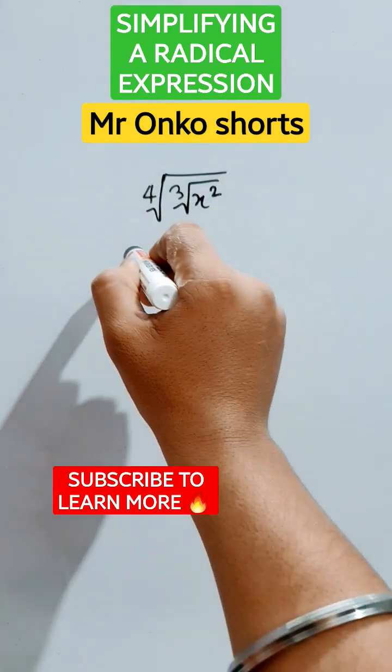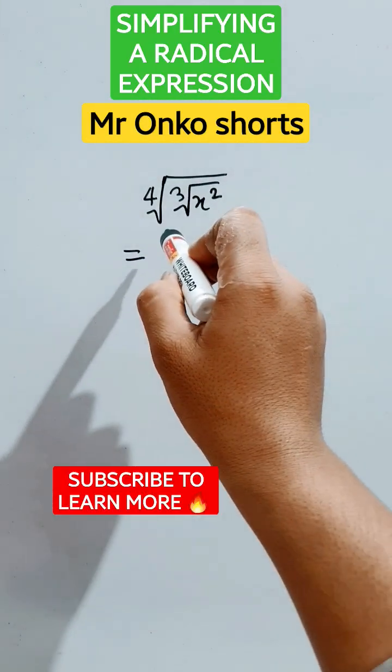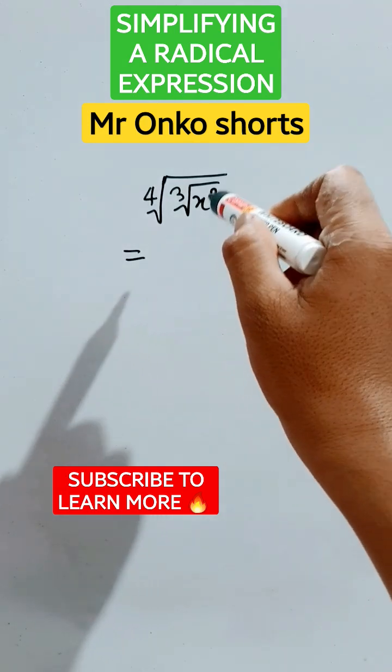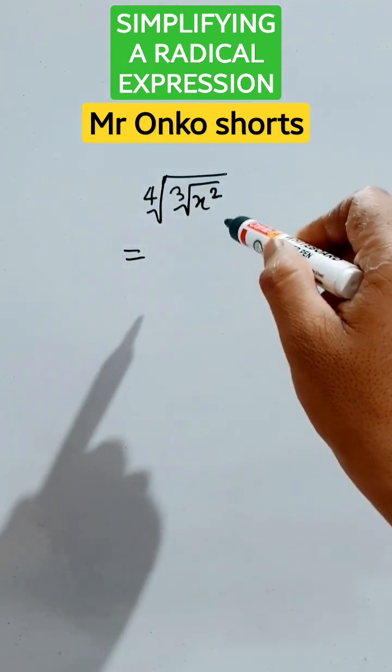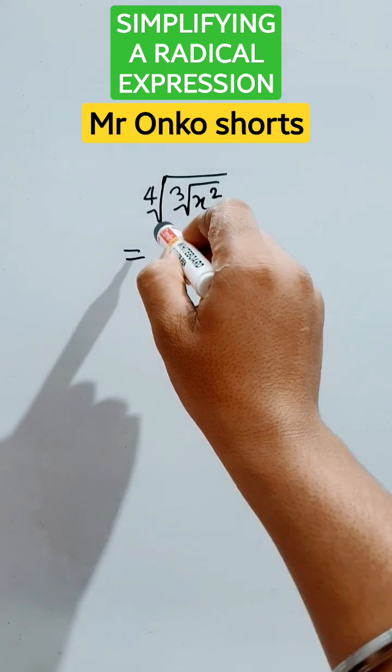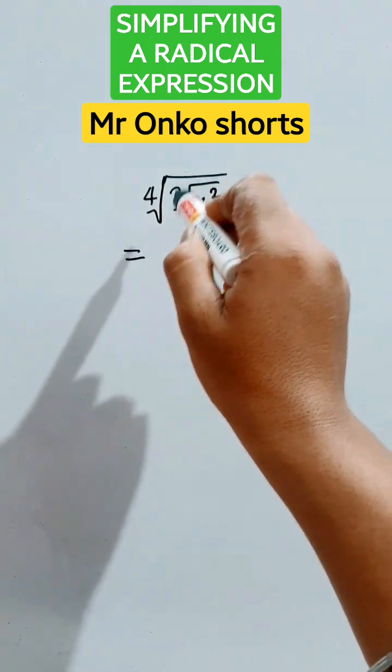Hello guys, welcome to Mr. Onko Shorts. Today we have a given radical question here we have to solve and find the simplified version of this question. So first of all, this is fourth root of this and inside of that cubed root, and inside x square.